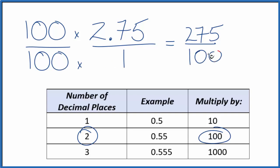And now we have this fraction: 275 over 100. We can simplify this. 25 goes into 275 eleven times, and 25 goes into 100 four times, so we have 11 fourths.